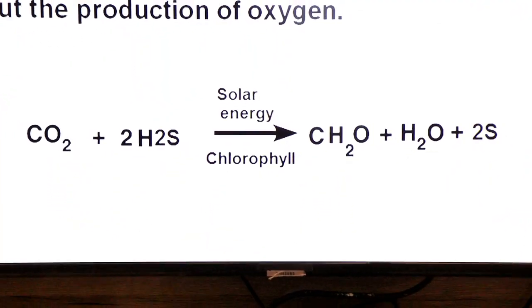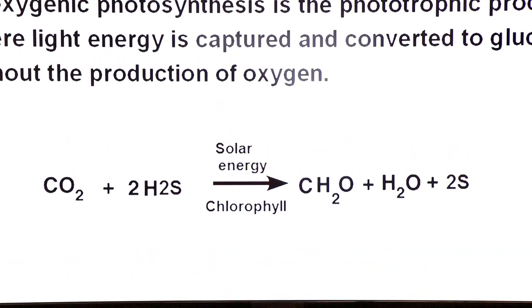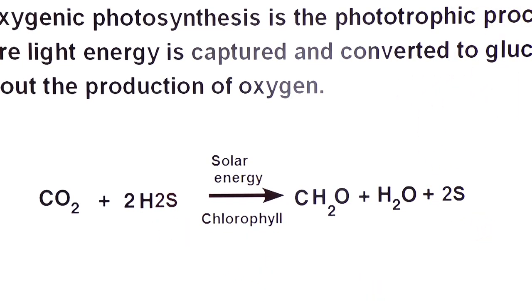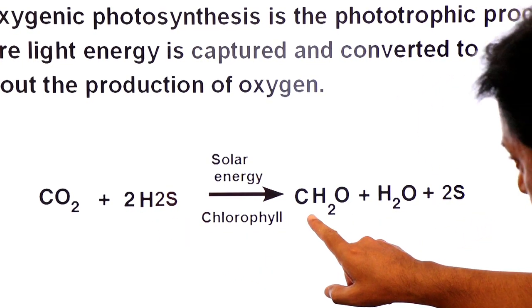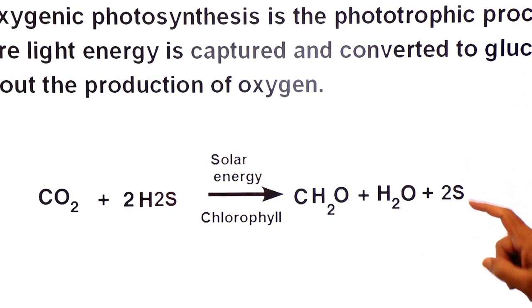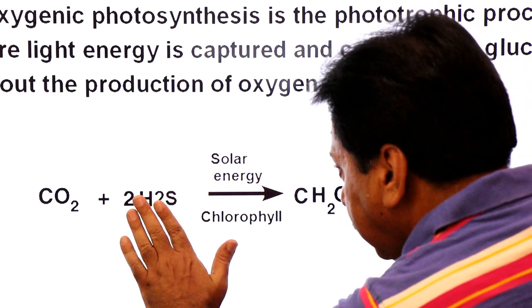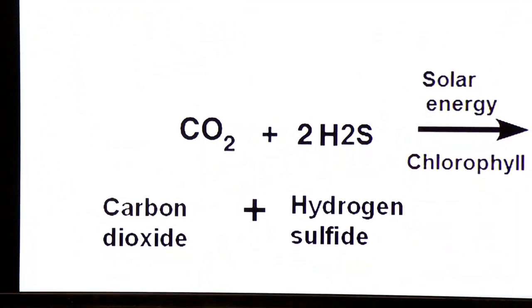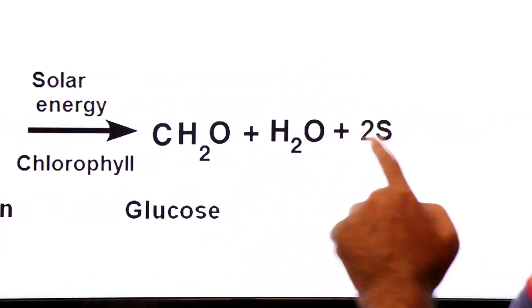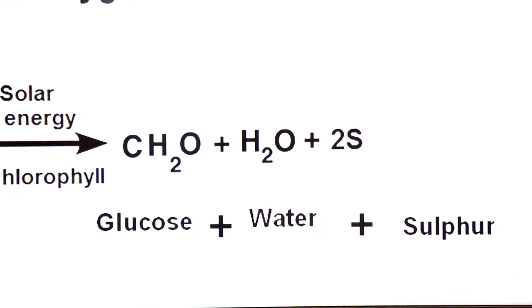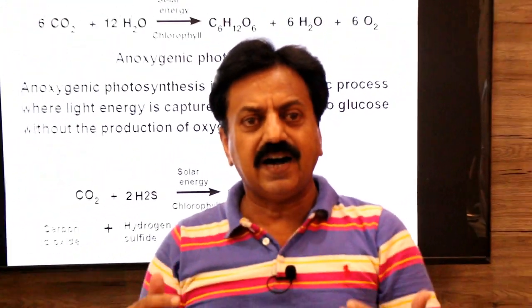Some bacteria, like purple sulfur bacteria found in hot springs, use carbon dioxide and hydrogen sulfide instead of water. They produce glucose and water, but instead of oxygen, sulfur is released — because their electron donor is hydrogen sulfide, not water. Looking at their equation: they use carbon dioxide and hydrogen sulfide; glucose is produced using its empirical formula, water is produced, and sulfur is released instead of oxygen.